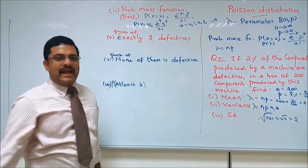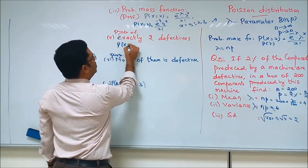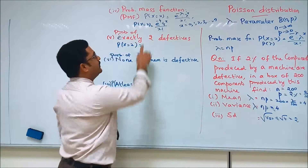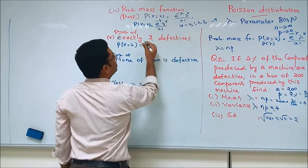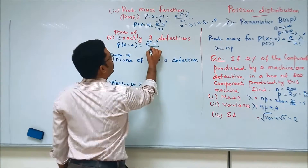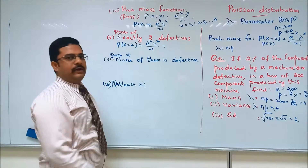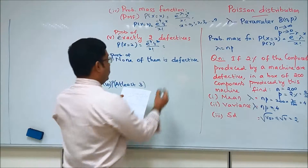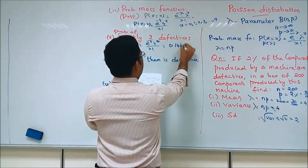For the probability of getting exactly two defectives, we find P(x = 2). Substituting x = 2, it is e to the power minus 4, times 4 power 2, divided by 2 factorial. Using your calculator, you get the solution as 0.1465.